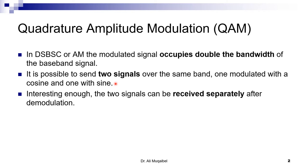So the question we pose is: is it possible to send two signals over the same band, one modulated with a cosine and another one modulated with sine? Interestingly, we will find out that if we modulate one with cosine and the other one with sine, we will be able to recover the two signals separately, although they occupy the same bandwidth. The reason is that the cosine and sine are orthogonal — they are quadrature, 90 degrees in phase to each other — so we'll try to prove this.